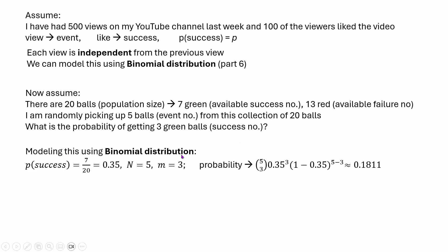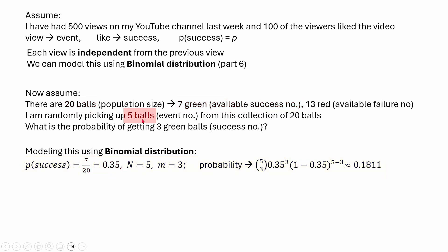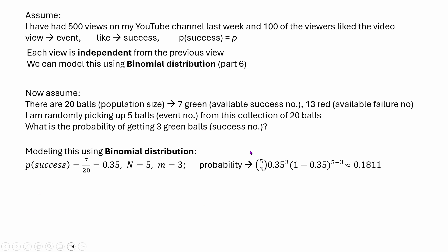If we model this using binomial distribution, we first need the probability of success — the probability of getting a green ball. There are 7 green balls from 20, so p = 7/20 = 0.35. We are picking 5 balls, so there are 5 trials, and 3 need to be green, so m = 3. Plugging these values into the binomial PMF gives us 0.1811. That's fine, but there is a huge problem with this approach.